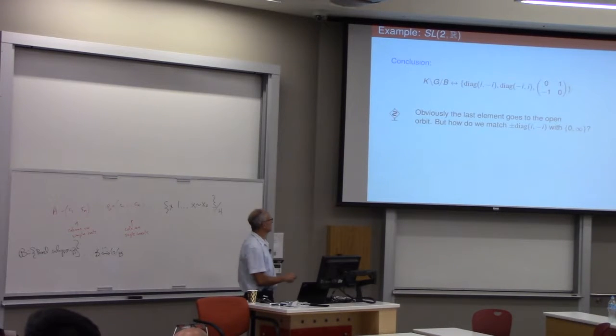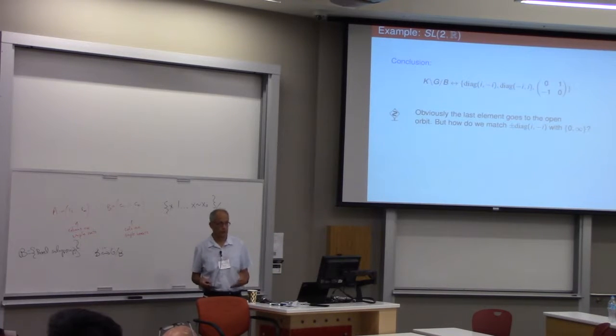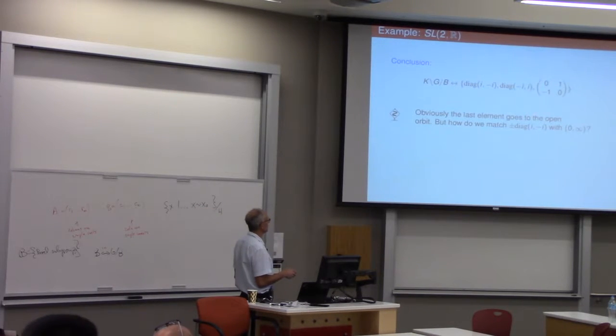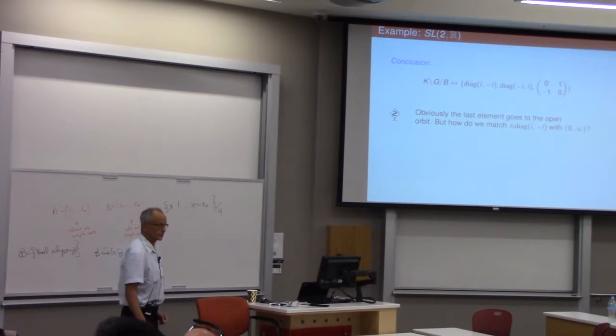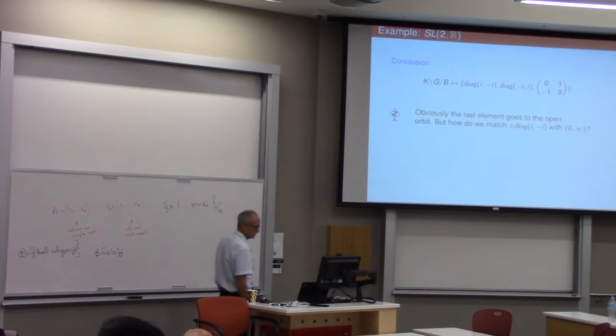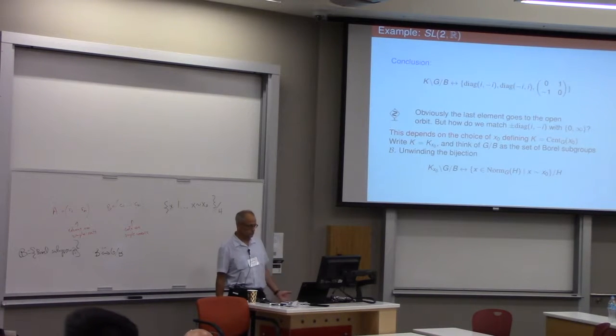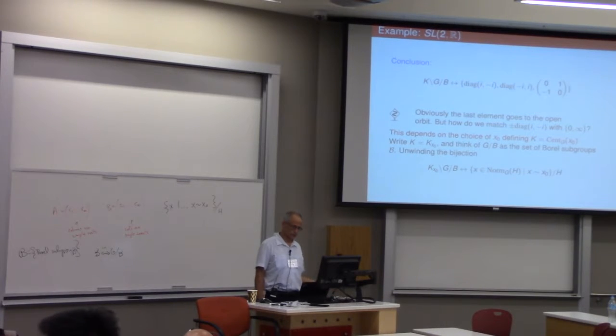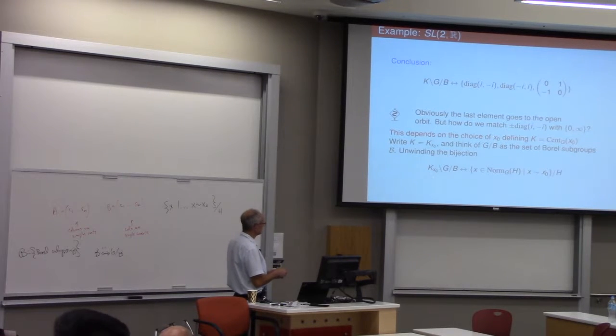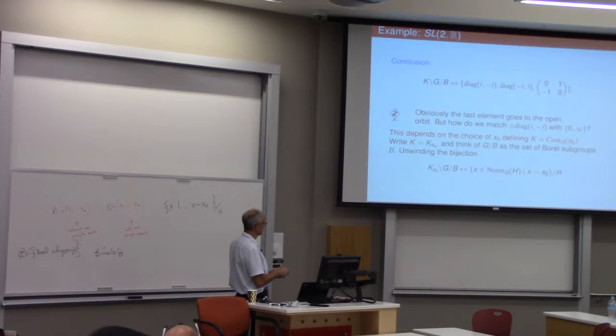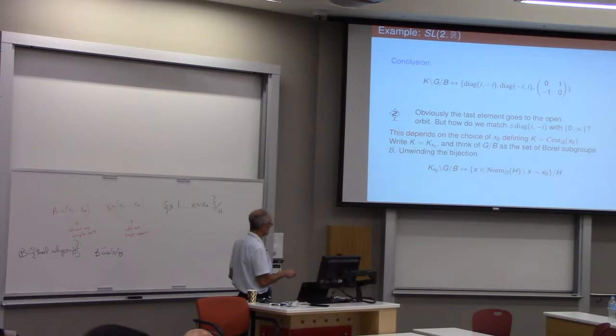What's the bijection of these three elements with the three orbits, zero, infinity, and the open orbit? Well, if you think about it, it's sort of clear that this element is going to the open orbit, but how do you match these two elements with zero and infinity? And you don't. Well, there's a choice there.